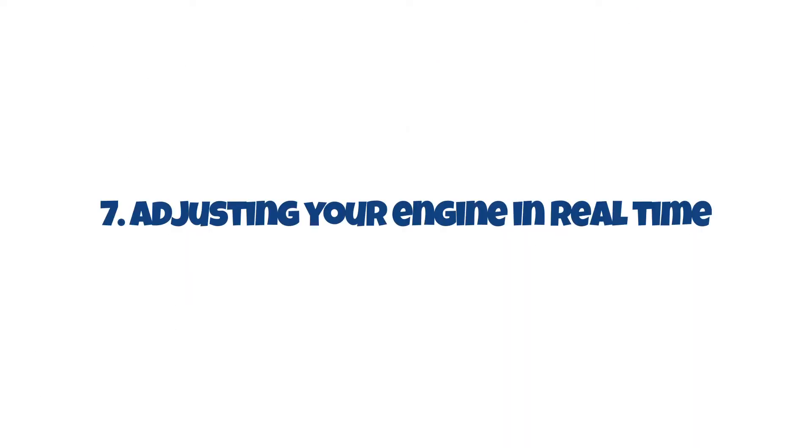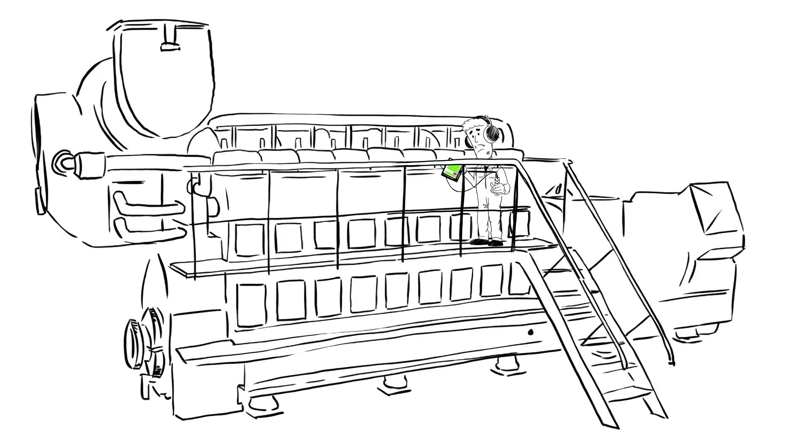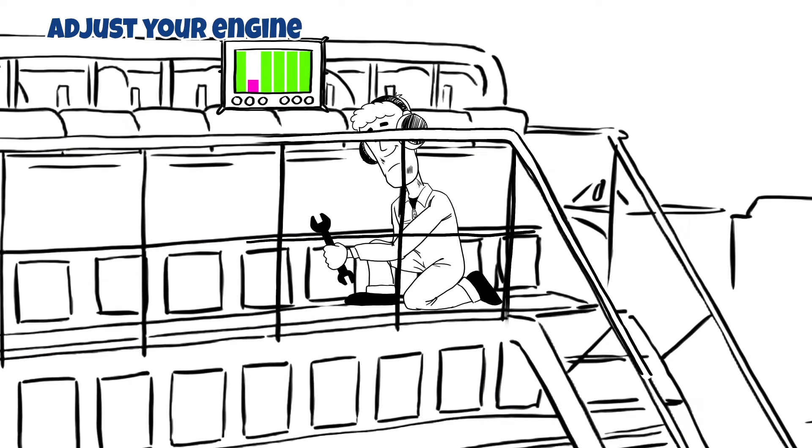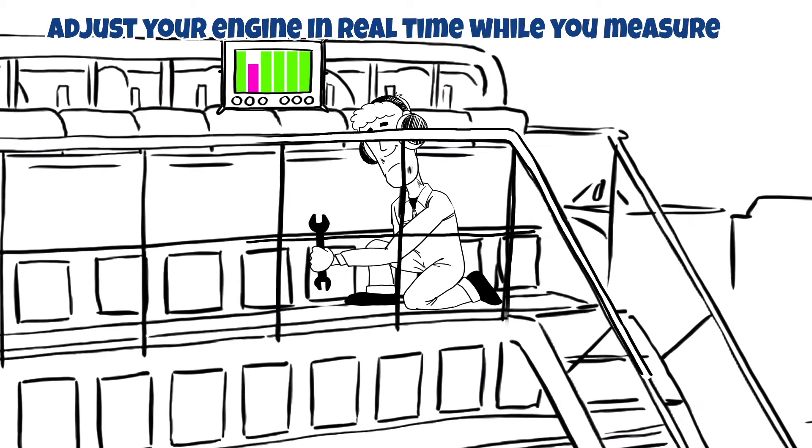Adjust your engine in real time. Only the Primit X allows you to adjust settings on your engine and to see the effect live while measuring. Your Primit X will continuously show you the actual measured and calculated readings in real time and you can adjust your engine and see the effect immediately.